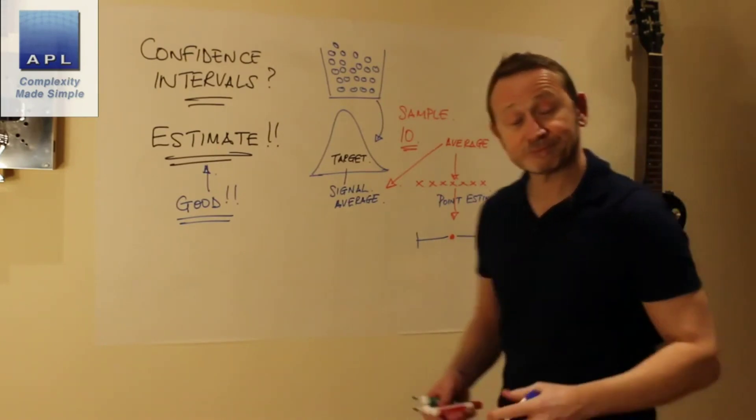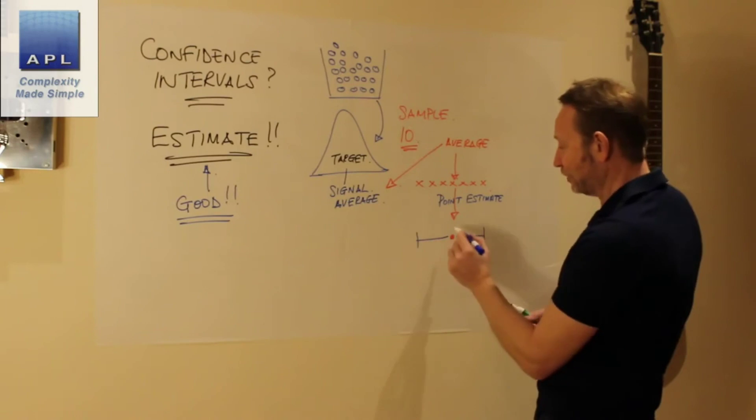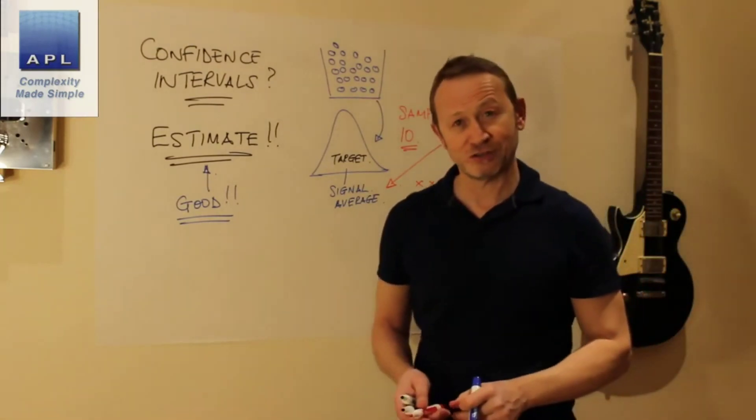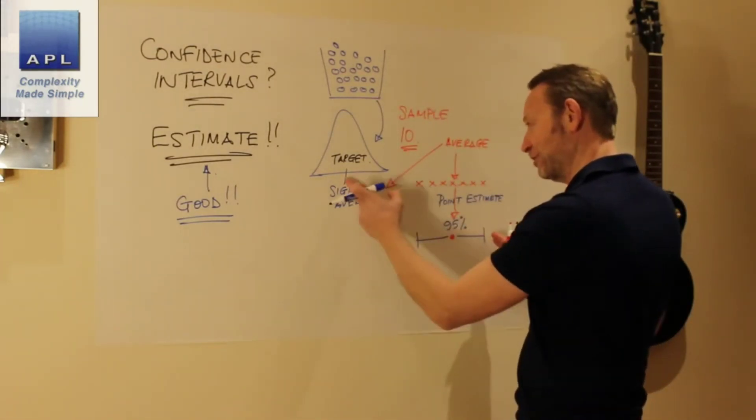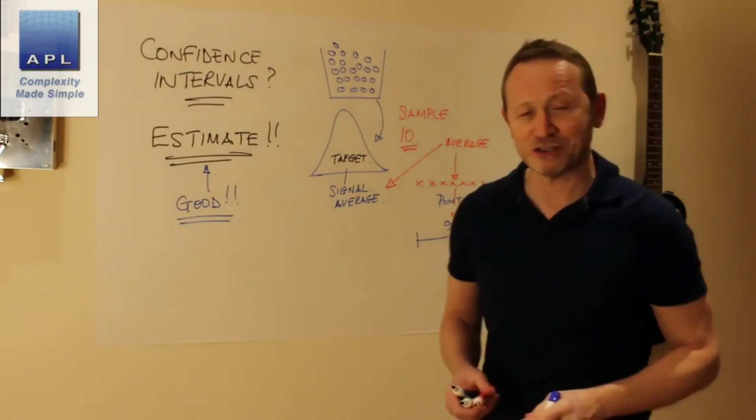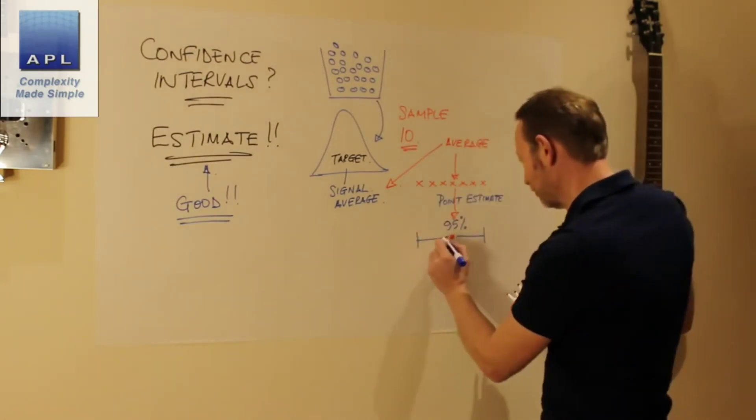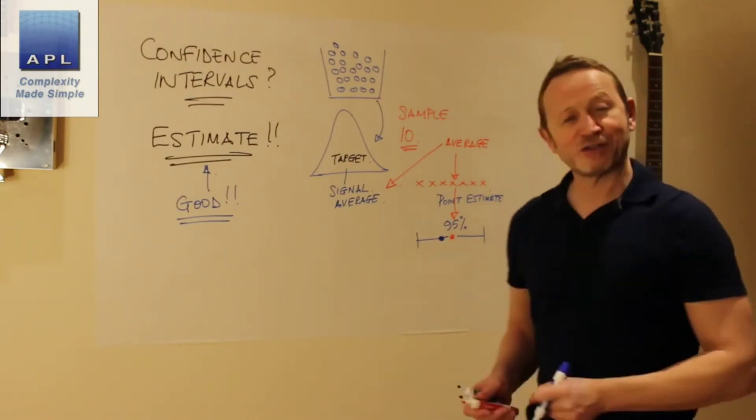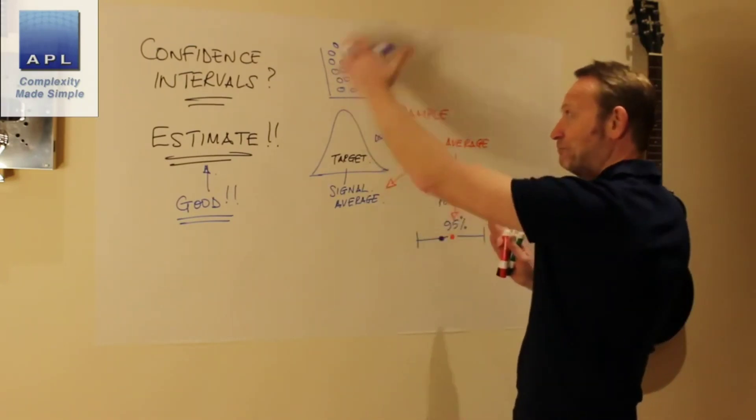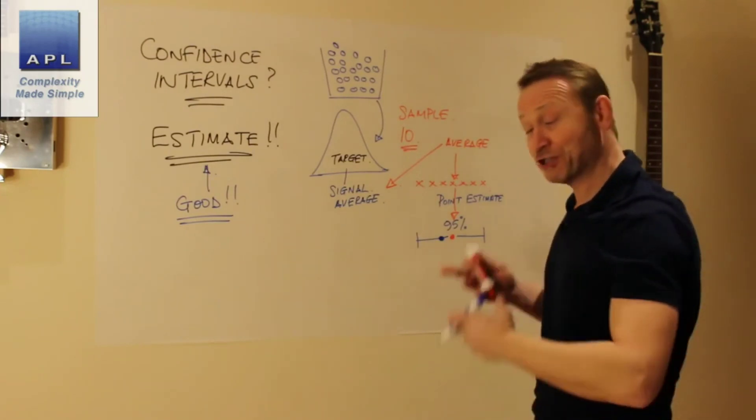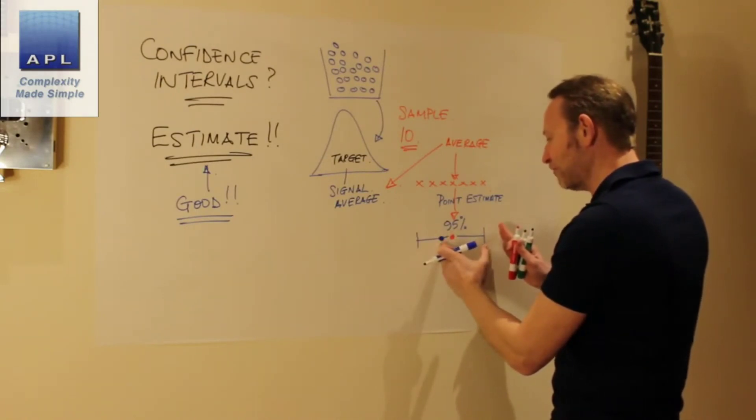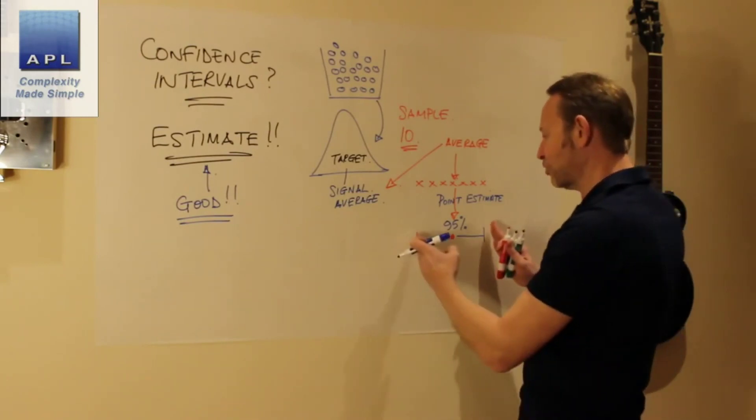This is known, by the way, as the point estimate. We build a boundary, and here's the sort of thing that the confidence interval will say: it'll say, well, if it's a 95% confidence interval, we are 95% certain that the true average - this thing here that we really wanted to know, the true average - is somewhere inside that boundary. So let's assume that the true average is really there. Our estimate is just to the right of it. We can't know that. We can never know that piece of information unless we sampled everything out of that bucket, which we're never going to do because it costs too much money.